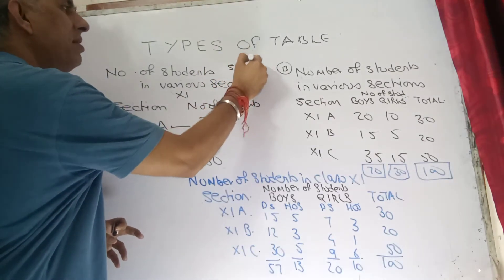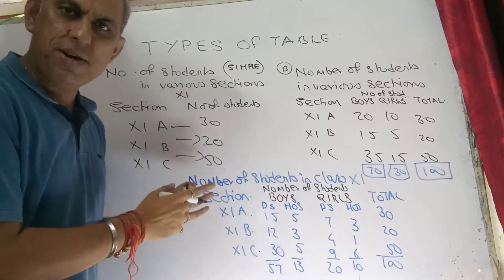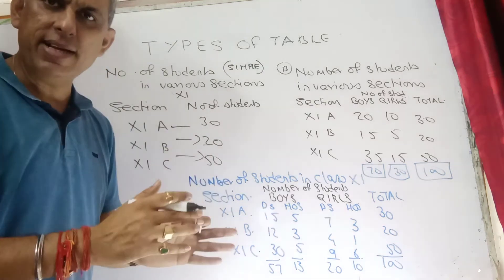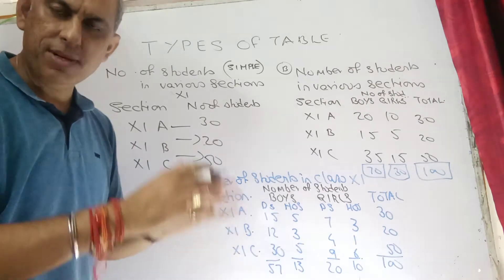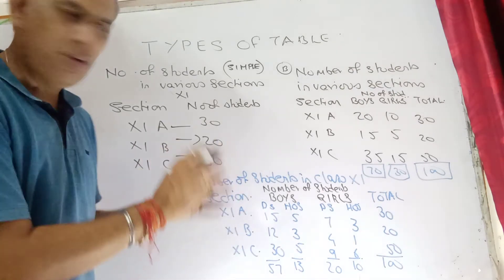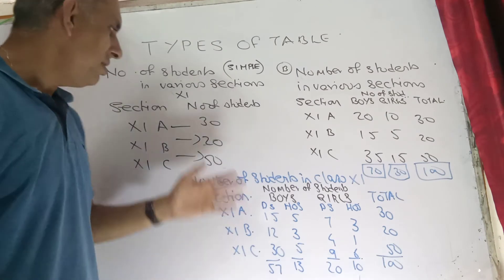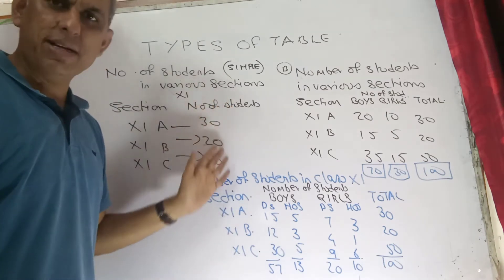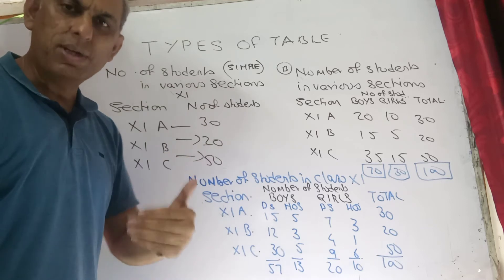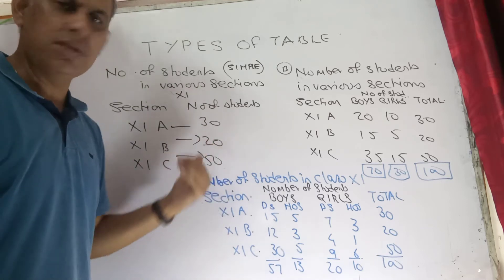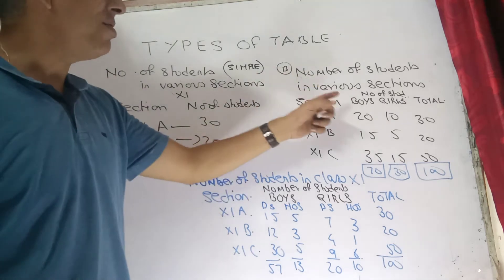This is what we call a simple table — nothing big in it. The information is not divided into multiple options, and whatever information is given is to be taken at its face value, with no deeper description. That is what a simple table is.